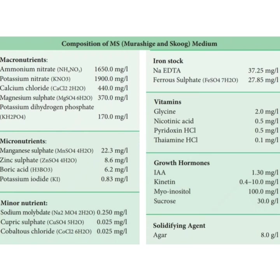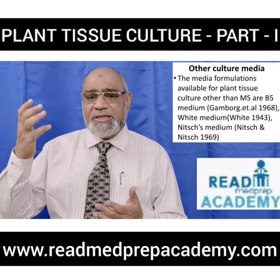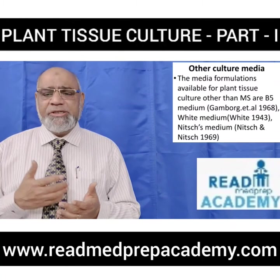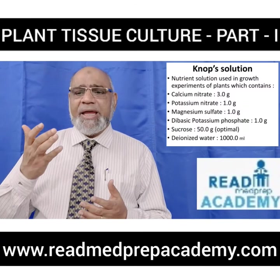Other culture media formulations available for plant tissue culture — besides MS — include: B5 medium produced by Gamborg et al. in 1968, White medium produced by White in 1943, Nits medium designed by Nitsch and Nitsch in 1969, and Knob solution. Knob solution is a nutrient solution used in plant growth experiments containing calcium nitrate 3 g, potassium nitrate 1 g, magnesium sulfate 1 g, dibasic potassium phosphate 1 g, sucrose 50 g, and deionized water 1 liter.